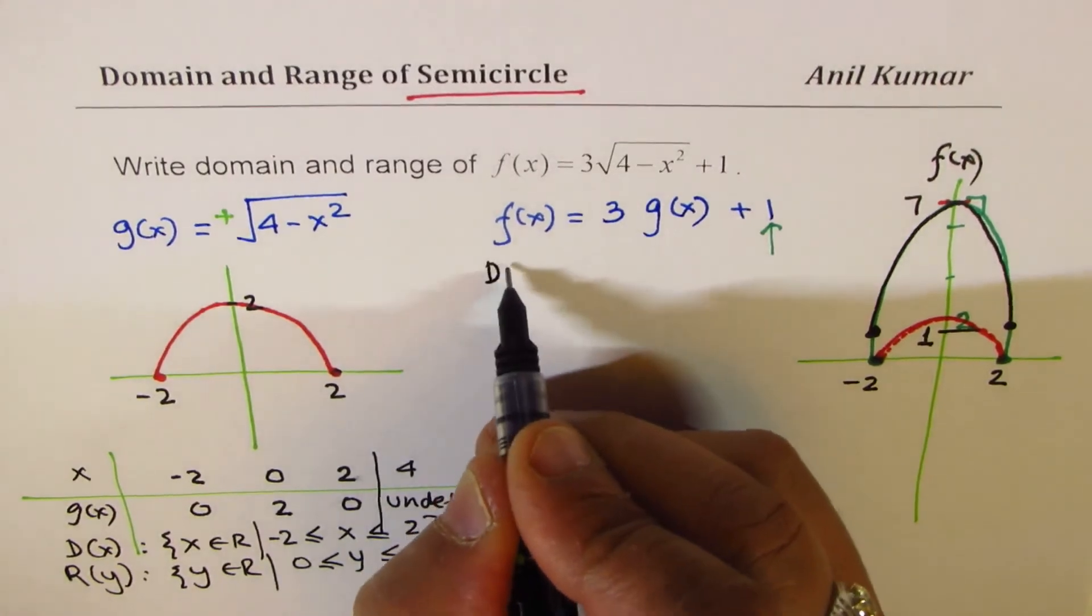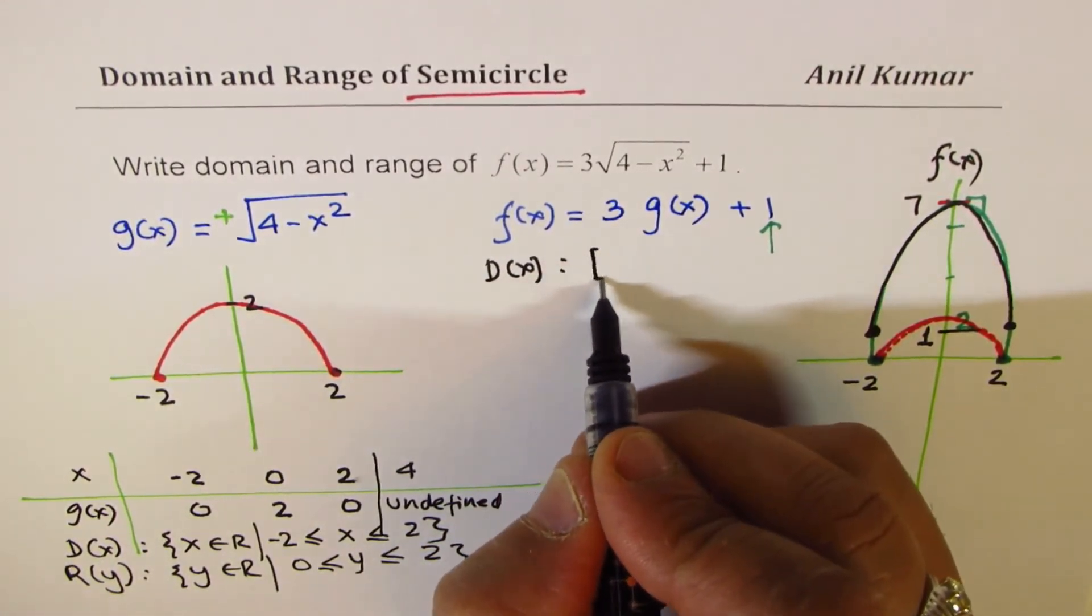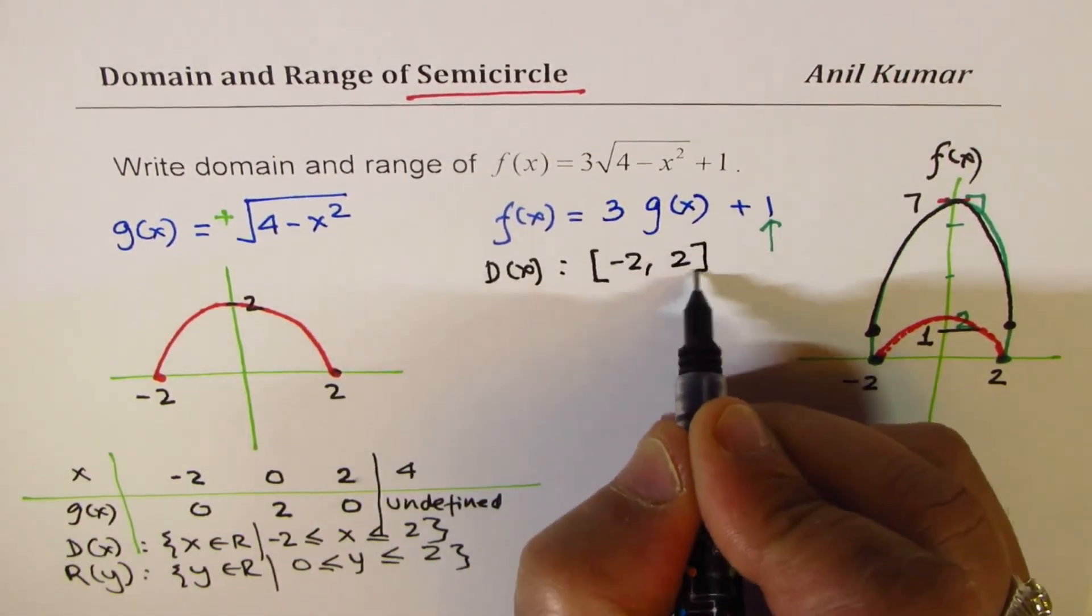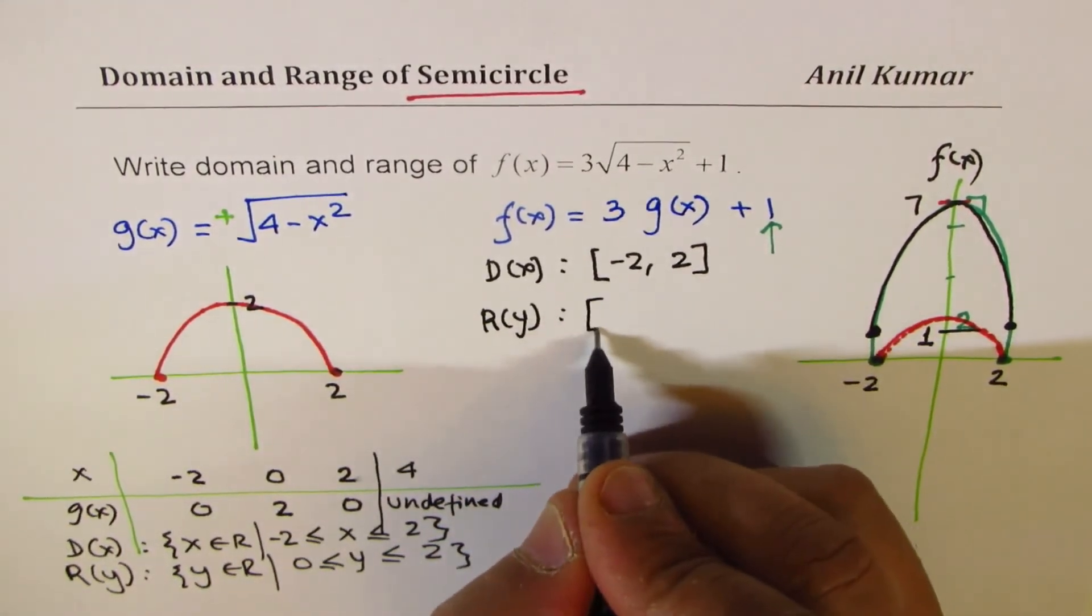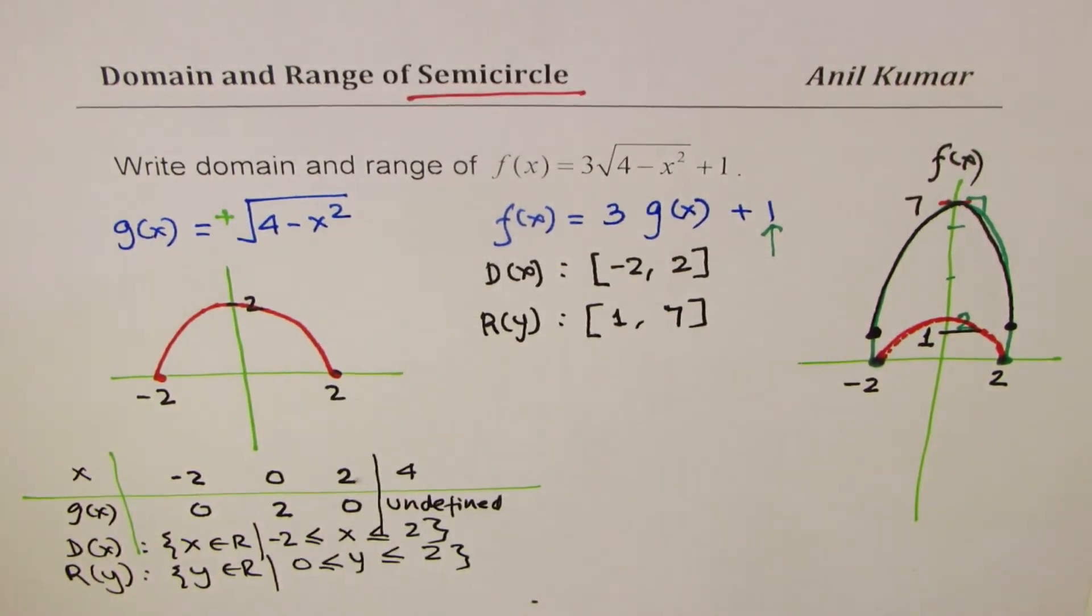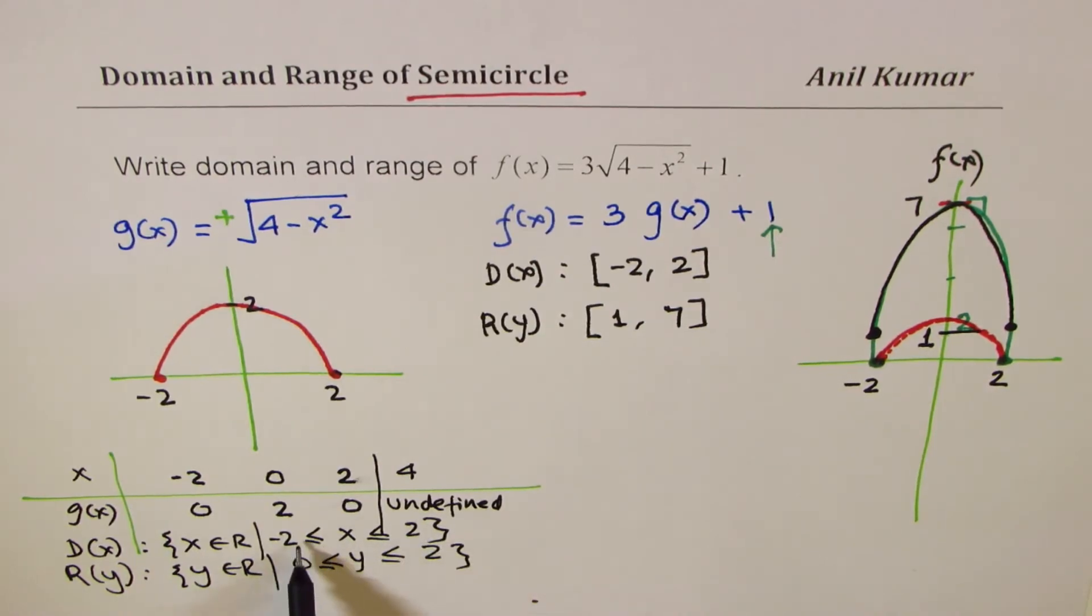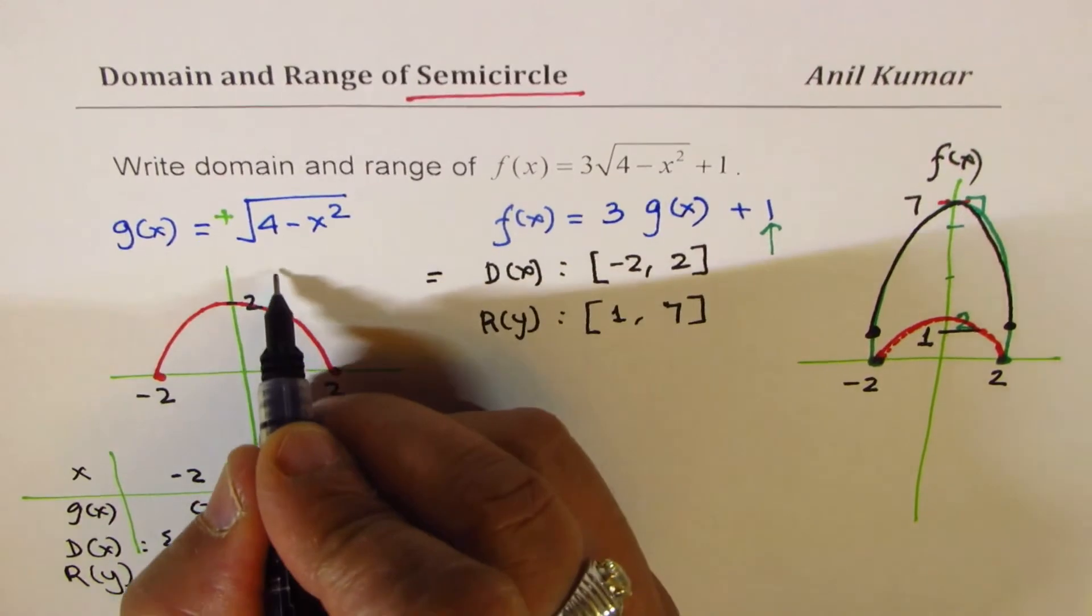So what do you really find? That domain of the function remains same, which is including, I'm using different nomenclature, minus 2 to plus 2. You could get this domain and range from g(x) also. See, for g(x) the domain is from minus 2 to plus 2. It remains same, which is same as g(x).